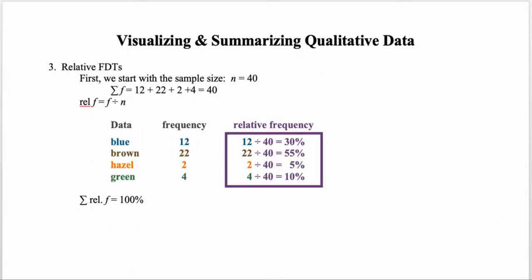One thing we can do with a frequency distribution table is convert it to a relative frequency distribution table. The sample size could change from sample to sample — in this case, adding the frequencies gives us a total of 40 participants. To compare across different groups, we want to make comparisons on the same scale, i.e., a relative comparison.